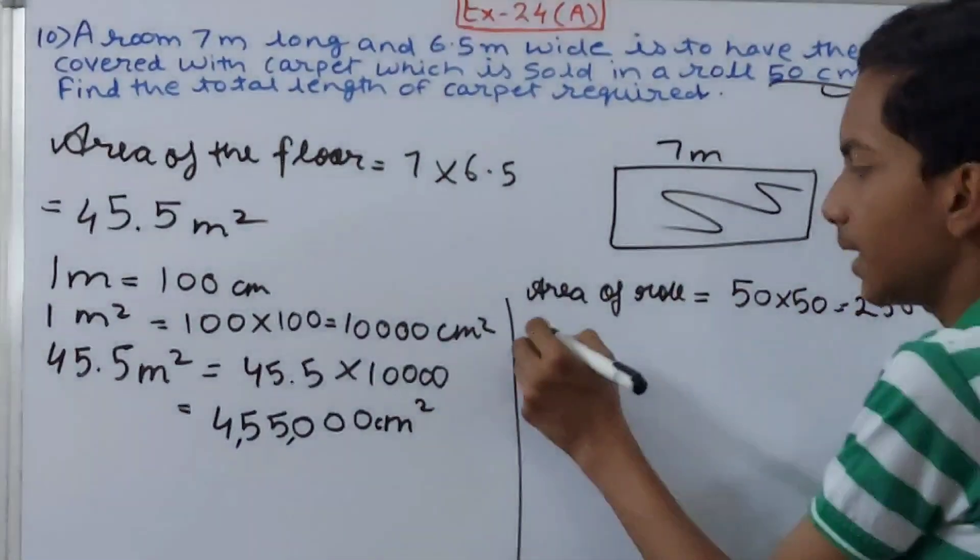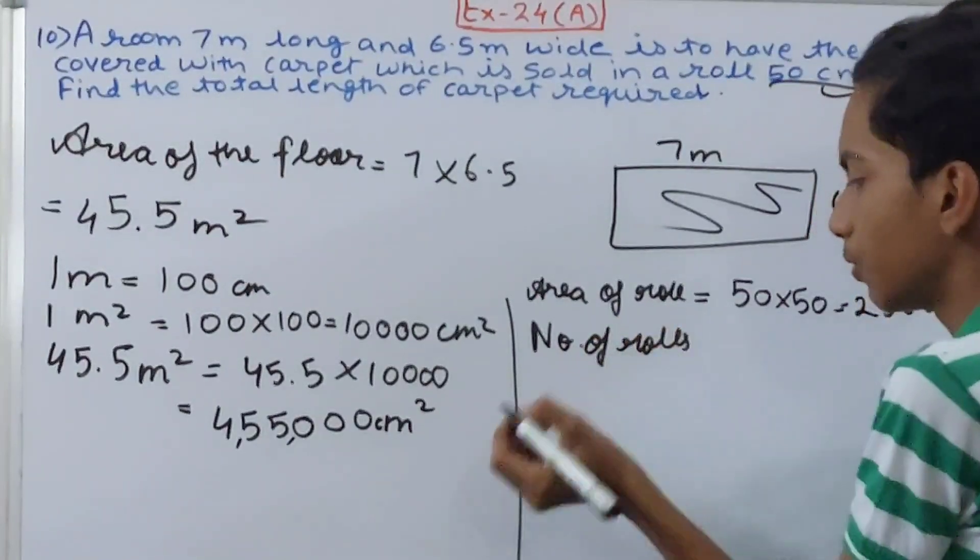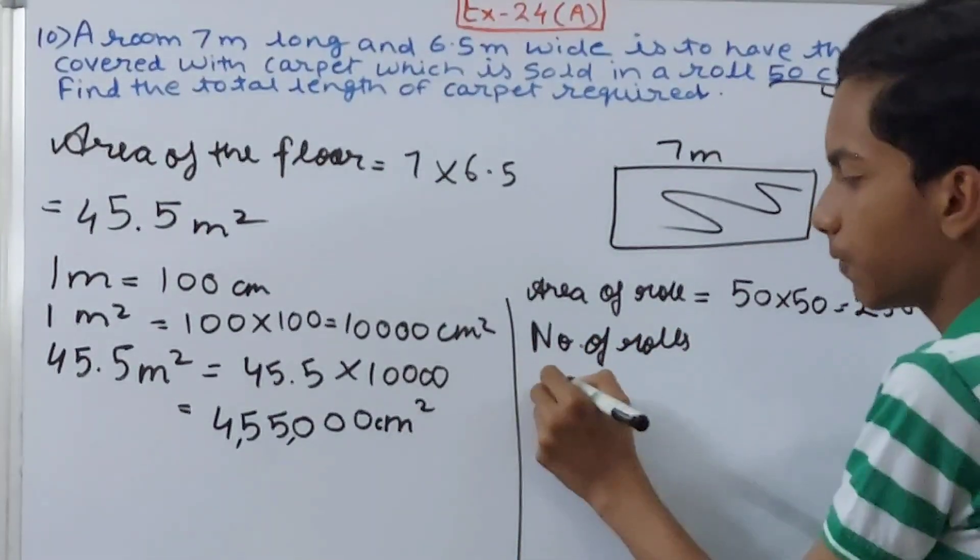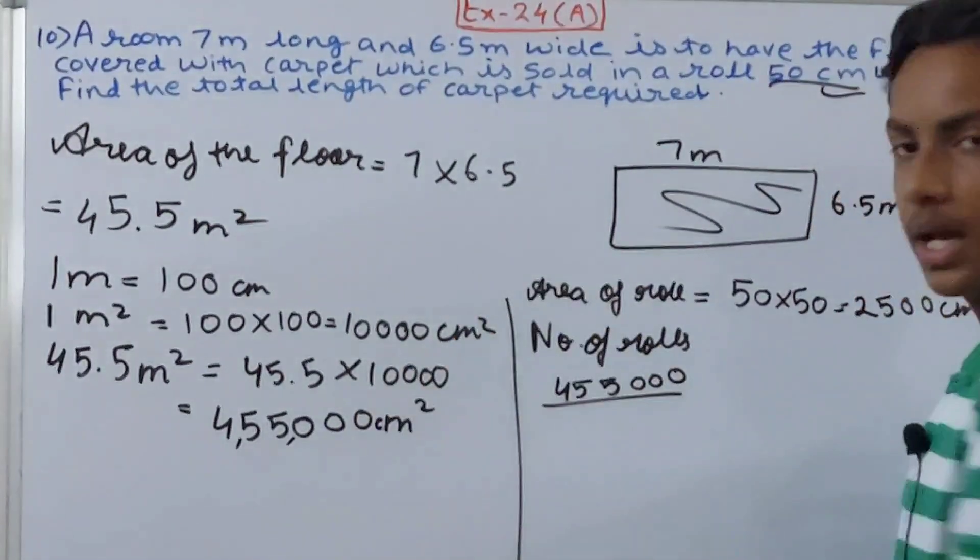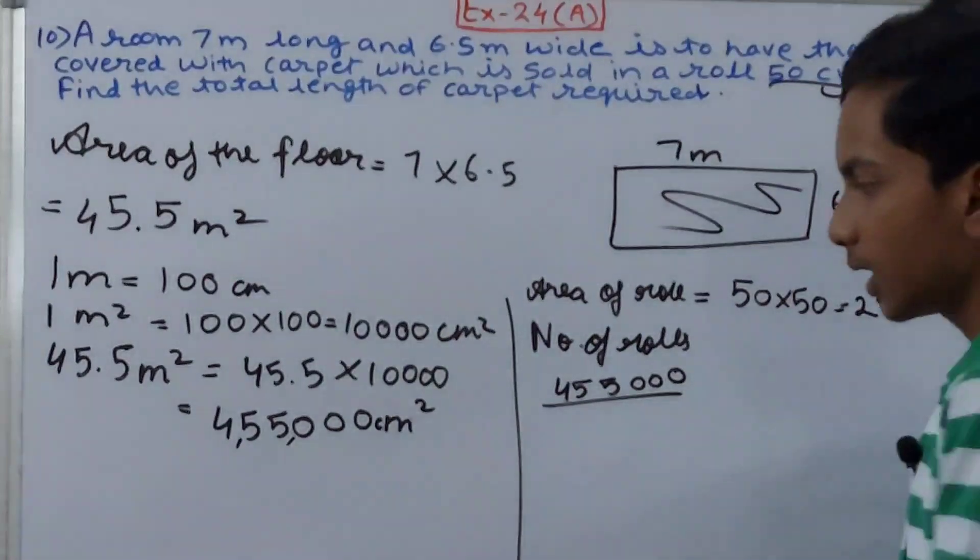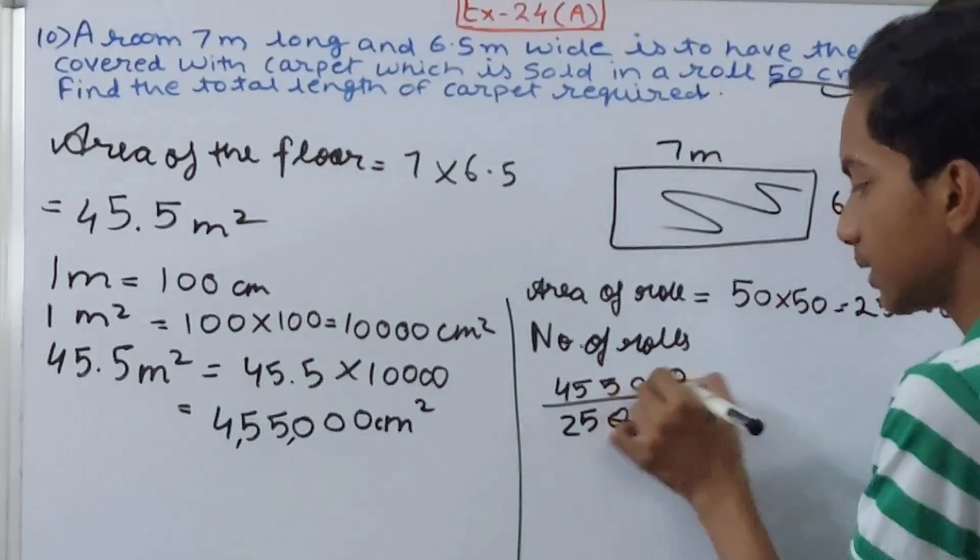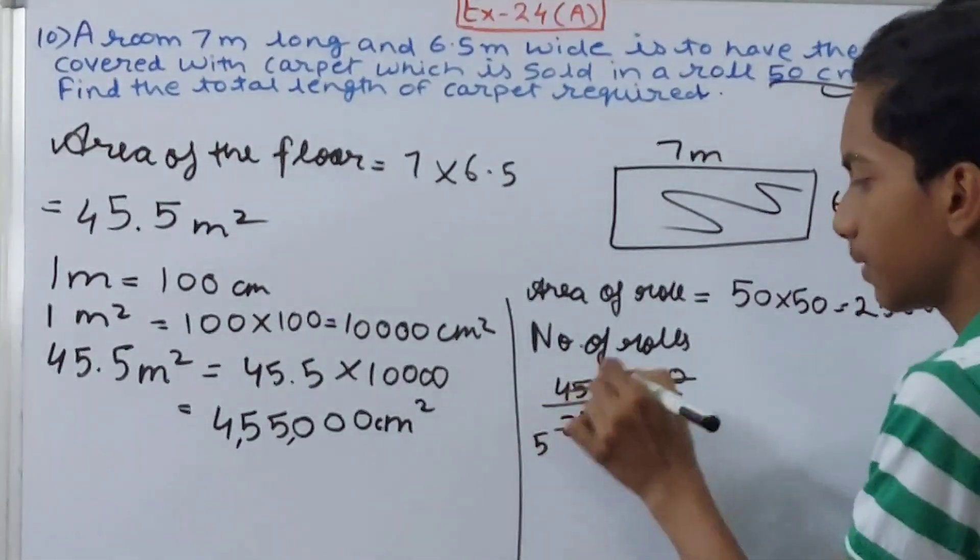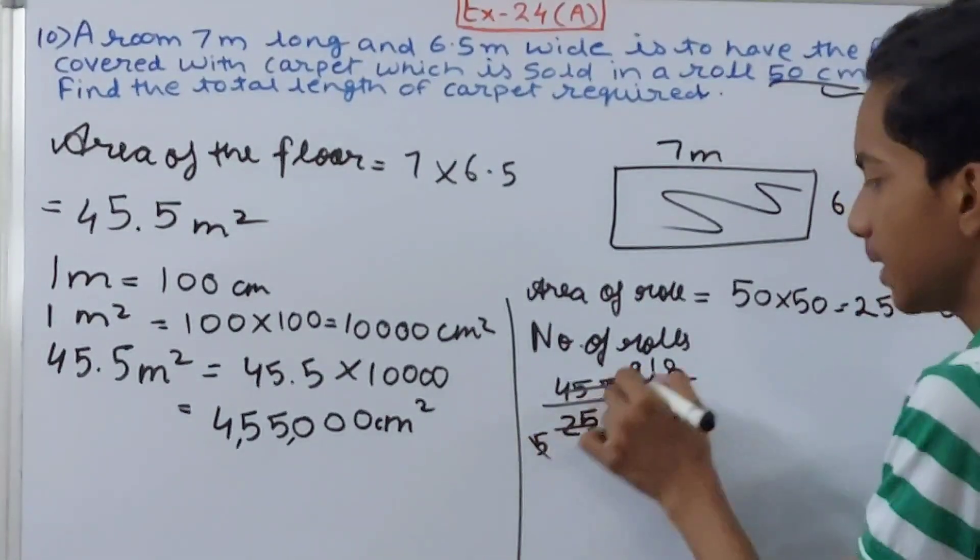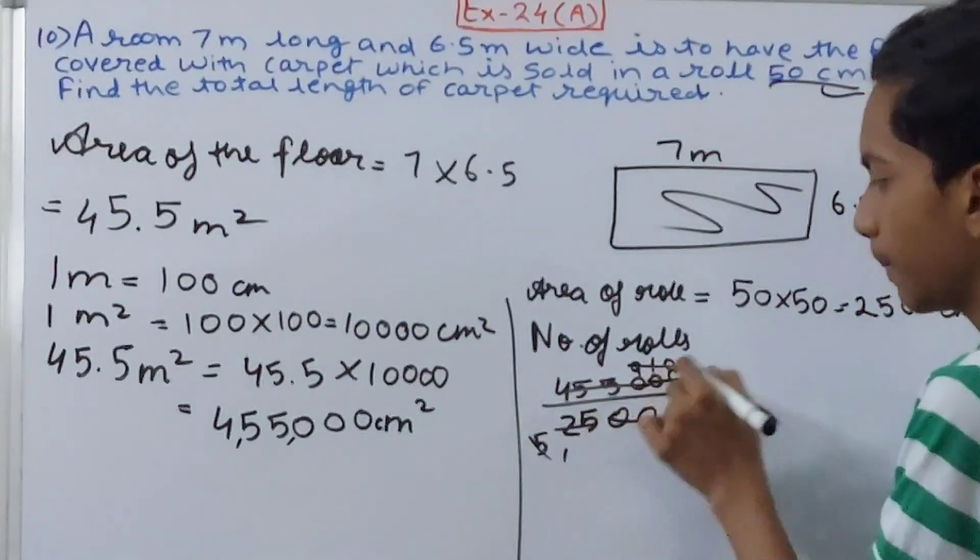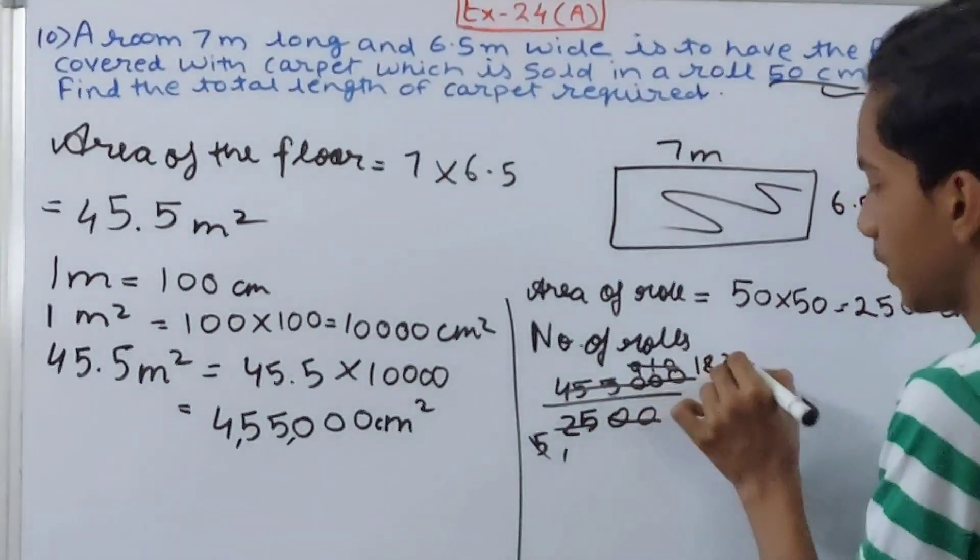Now find the number of rolls required. Number of rolls will be 455,000 - the area of the floor - divided by area of the roll, that is 2,500. This zero cancels, this zero cancels - after canceling, we get 182 rolls.